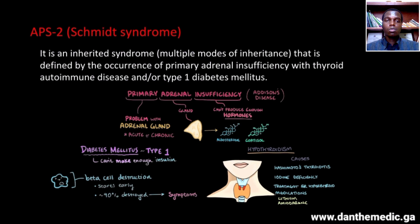As for type 2, it's also an inherited syndrome but has multiple modes of inheritance, meaning it can be autosomal dominant and also autosomal recessive. It is defined by the occurrence of primary adrenal insufficiency with thyroid autoimmune disease and/or type 1 diabetes mellitus.